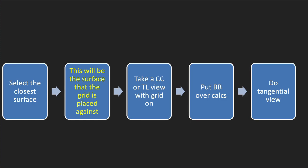This is how we do the tangential views. The most important thing is to decide what you think is the closest surface — in other words, if they're in the skin, what part of the skin are they in? Are they in the top of the breast, the bottom, the lateral aspect, or the medial aspect? This is the surface you're going to place your alphanumeric grid against, and this is key to the whole thing. If you put the grid against the wrong surface of the breast, you won't be able to show if they're in the skin and may falsely call skin calcs not skin calcs. You set the patient up in either the CC or the true lateral projection, with the grid against that skin surface.